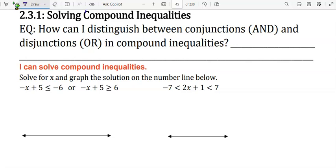This is an OR compound inequality. We have -x + 5 ≤ -6 or -x + 5 ≥ 6. We'll solve each one separately.